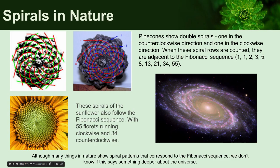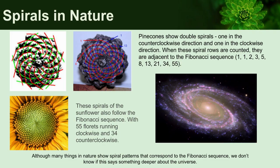The same thing goes for this sunflower here. If you count the florets running clockwise and the florets running counterclockwise, you also see that their numbers are adjacent to the Fibonacci sequence — 55 and 34 are shown there. So why are these intricate shapes that occur in nature related to a mathematical sequence? No one really knows why, or if it says something deeper about our universe or nature in general, but it definitely is interesting that it happens.